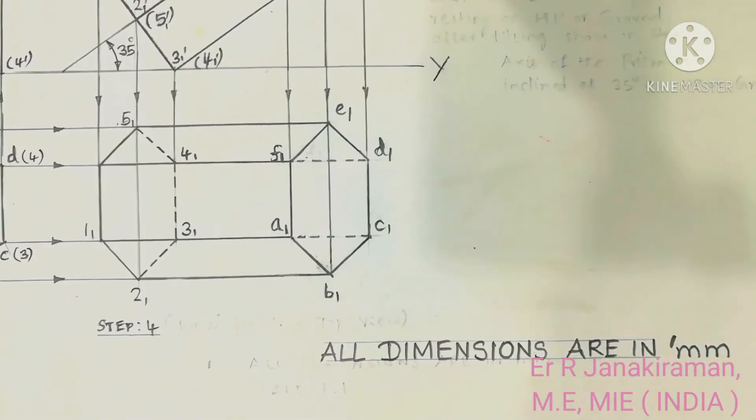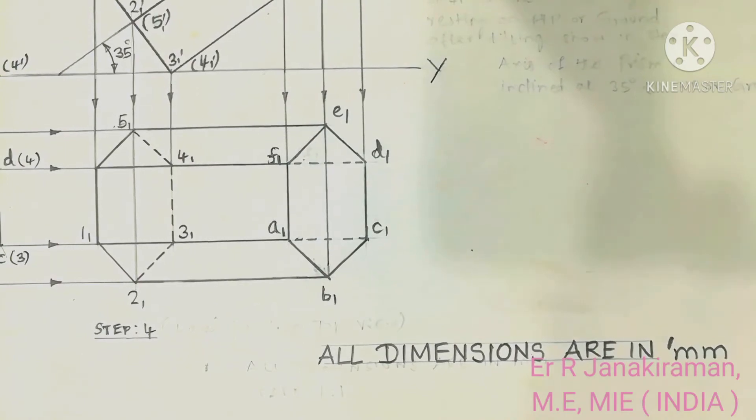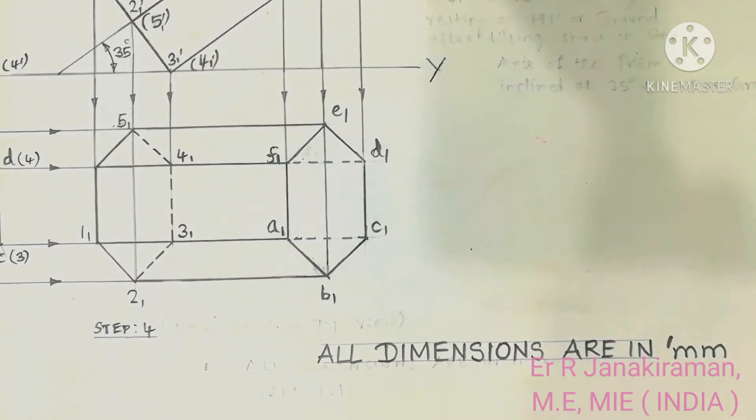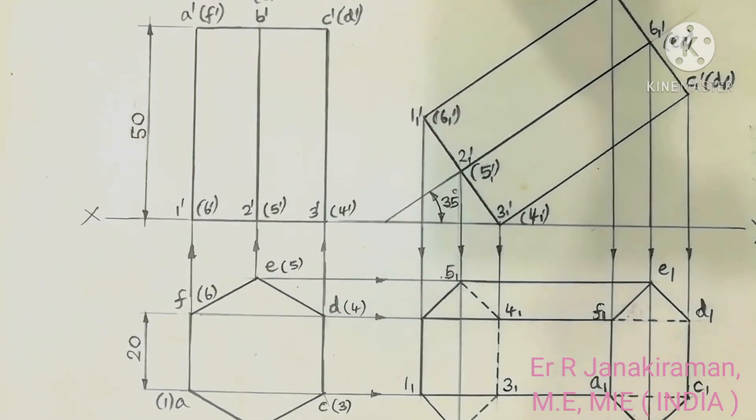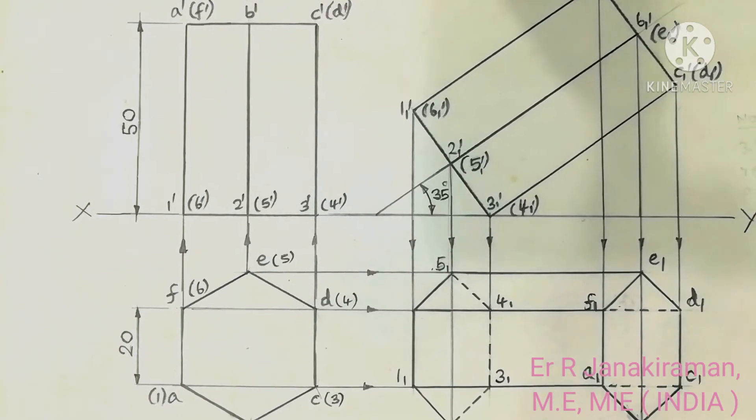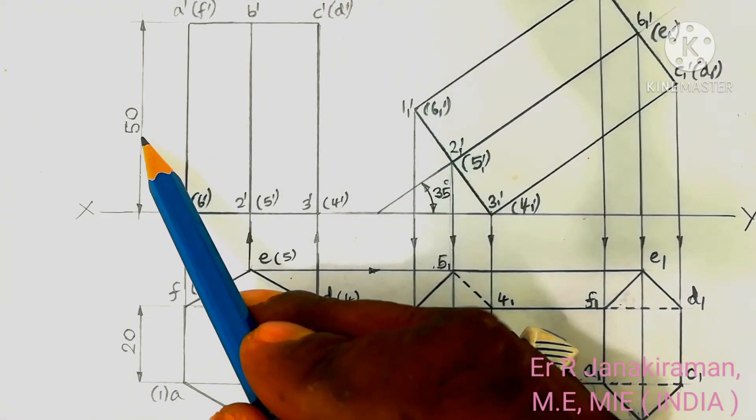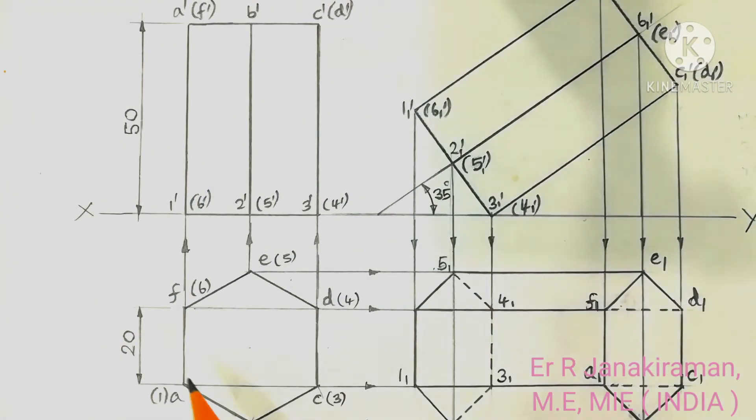So, the unit followed is millimeter. All dimensions are in mm. That is millimeter is followed. Because the size dimension is of height 50, vertical height is 50 of the prism, and base side is 20 mm.